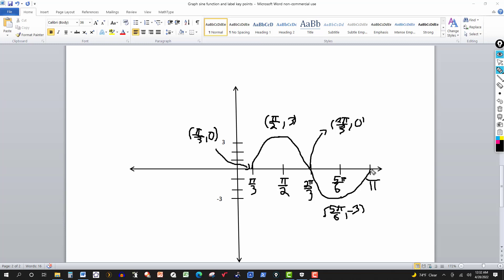And then the final or the fifth point right here at the end is the point pi and 0. So we get pi over 3 and 0 here. Pi over 2 and 3 up here. Intercept here, 2 pi over 3 and 0. And a little point over here, 5 pi over 6 and negative 3. And then the end point is pi and 0.